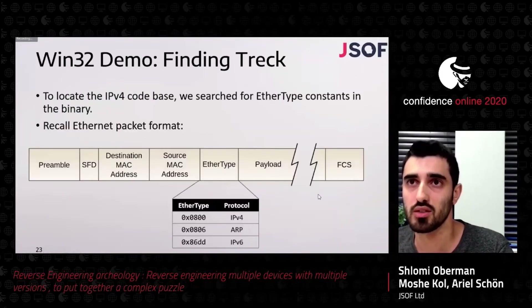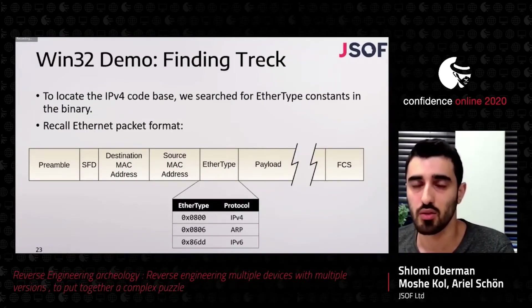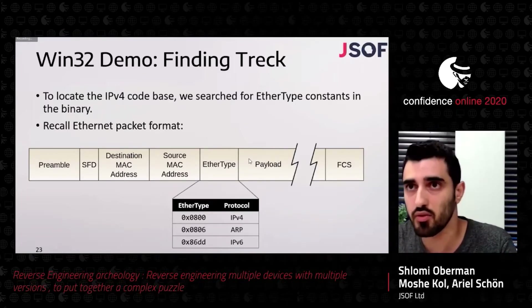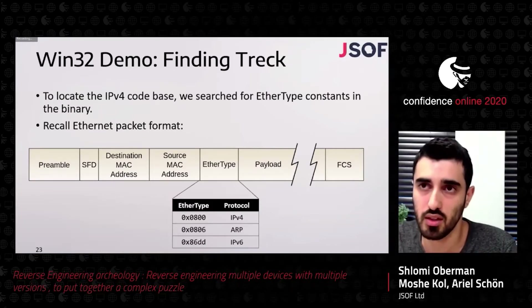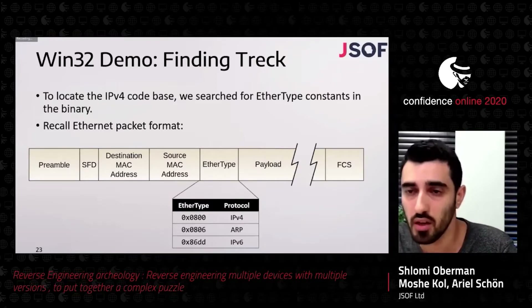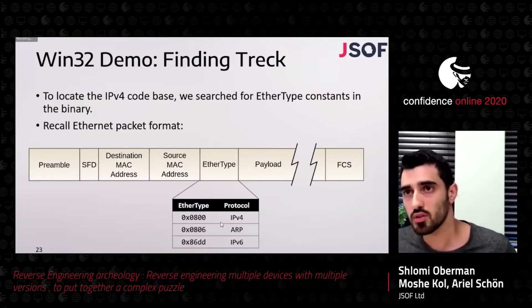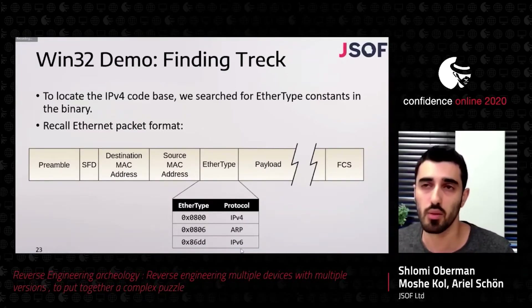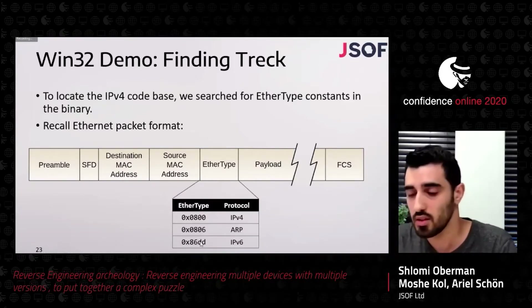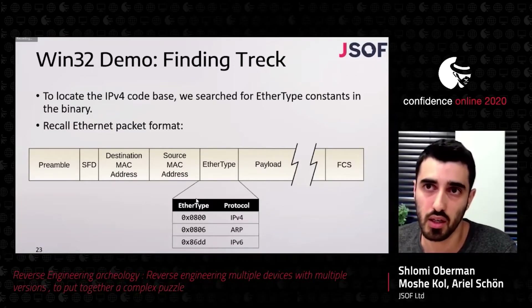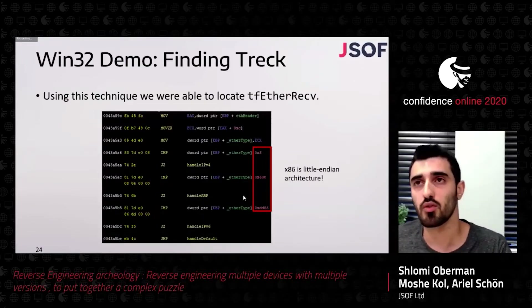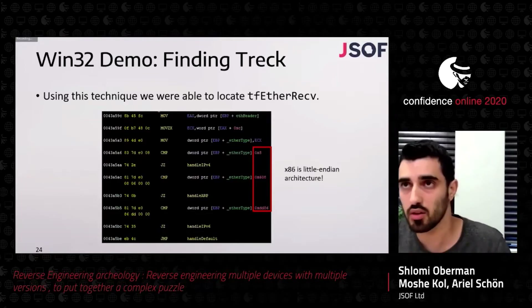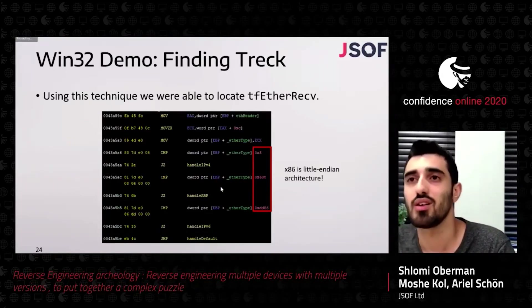What we ended up doing was using the EtherType field of the Ethernet packet to look at the function processing Ethernet frames. Inside the Ethernet frame format there is a two-octet field called EtherType that specifies what type of payload the Ethernet frame is carrying. For IPv4, the constant is 0x0800; for IPv6, the constant is the pretty unique 0x86DD. We simply searched for these constants in the binary and intersected all functions in which these three constants appear. That way we were able to find the function that processes the Ethernet packet — it is called tf_ether_receive, as we later came to realize.